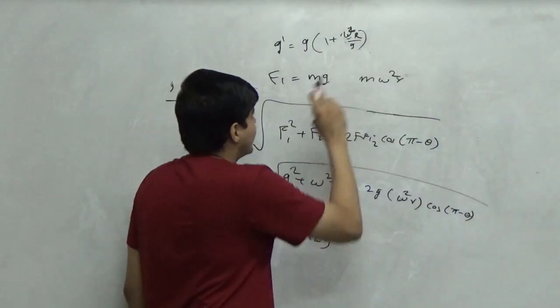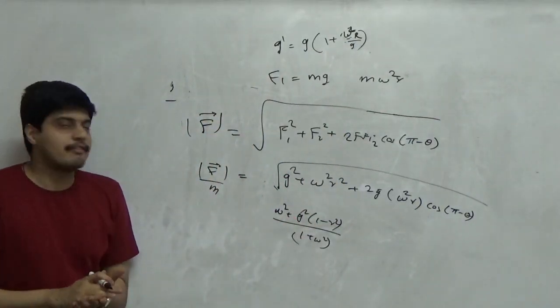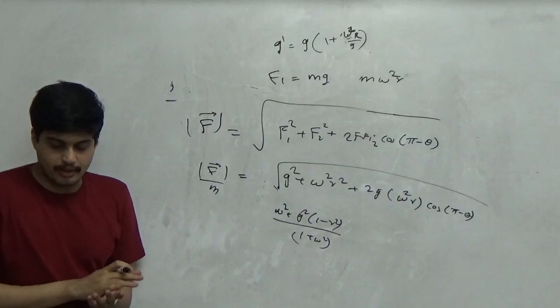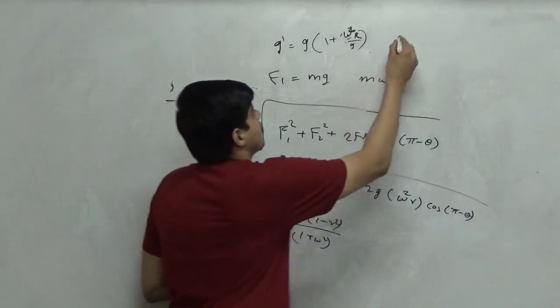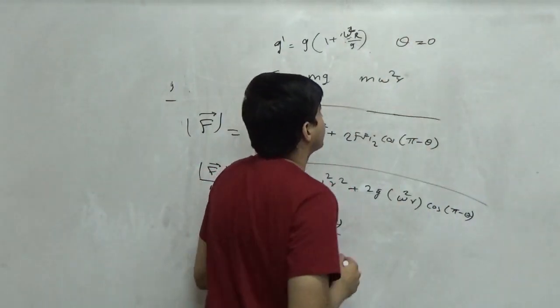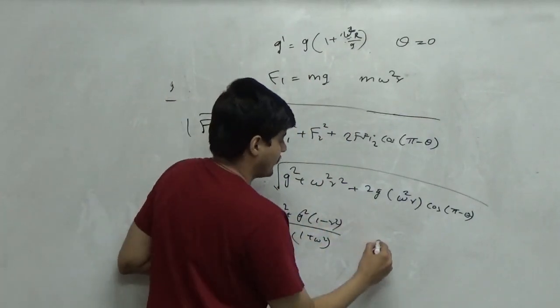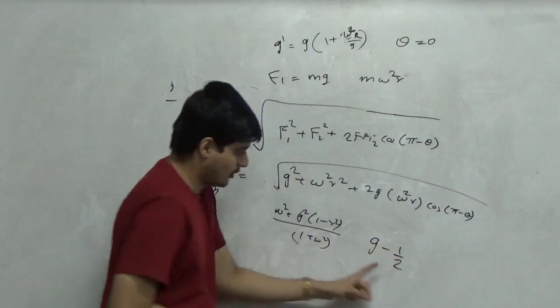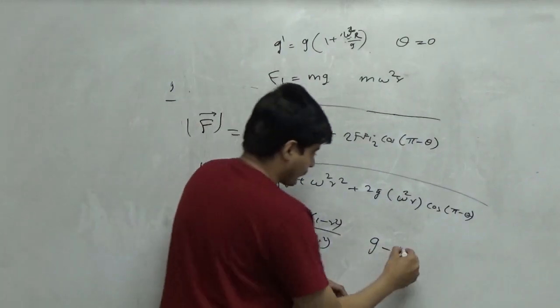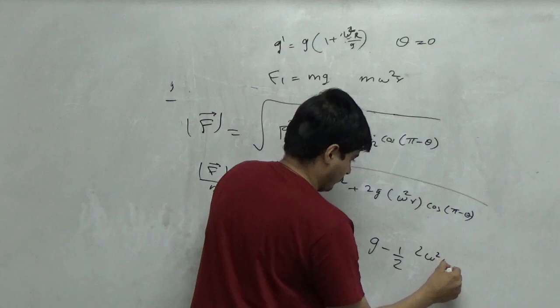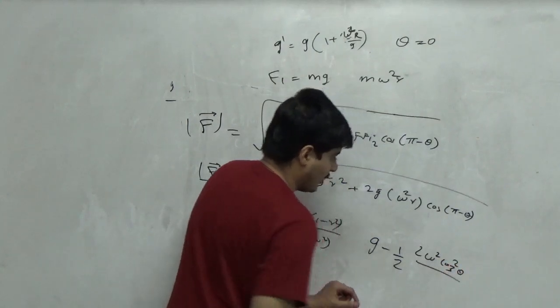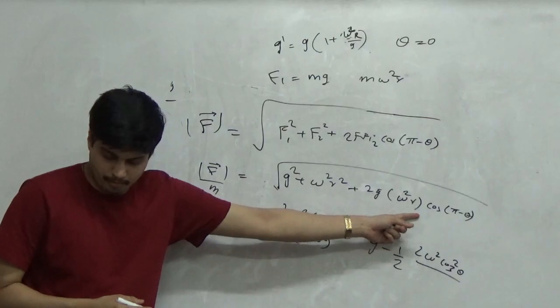This implication - so far we saw does not have any kernel of theta. This is only valid when theta is equal to zero, because the cos theta component was not there. So as a function of cos theta it will be simply 1 minus omega square r square cos theta upon 2g. Because that's what you will get from here.